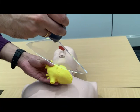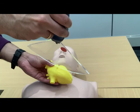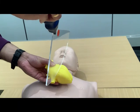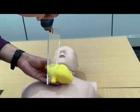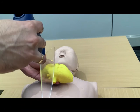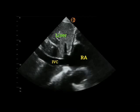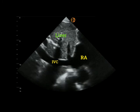From the subxiphoid four chamber view, if you rotate the transducer counterclockwise such that your probe orientation marker is towards the patient's head, you will slice the inferior vena cava in its long axis.